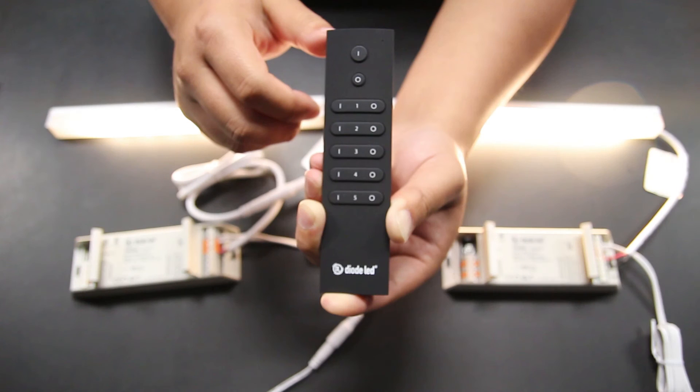Now that we know how to set up the TouchDial receiver with single color LED lighting, let's learn some of the functions. Diode LED makes LEDs easy to understand, effortless to adapt, and simple to use. The five-zone single color dimmer remote follows just that.